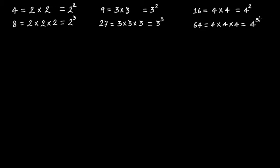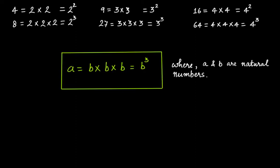You can check with other numbers as well and you will find the same trend. If you have a natural number A that can be written as B times B times B — that is B cubed — where B is also a natural number, then A is a perfect cube, or a cube number.